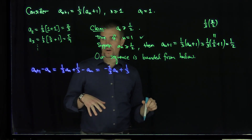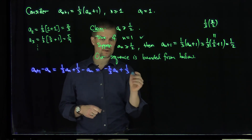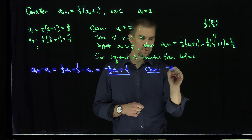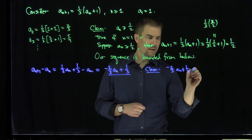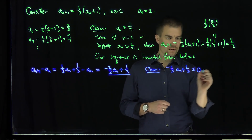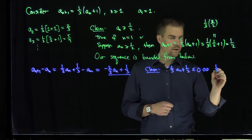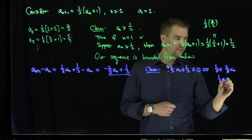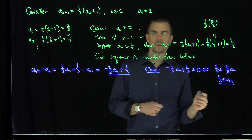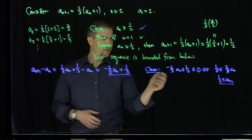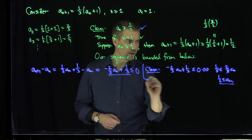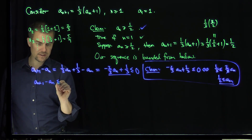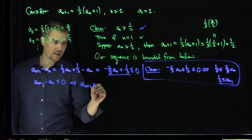We want to show this difference is less than or equal to zero. We claim that negative two-thirds a_n plus one-third ≤ 0, which is equivalent to one-third ≤ two-thirds a_n, or a_n ≥ one-half. This is true by our induction result. So a_{n+1} minus a_n is less than or equal to zero, meaning a_{n+1} ≤ a_n, which says our sequence is non-increasing.